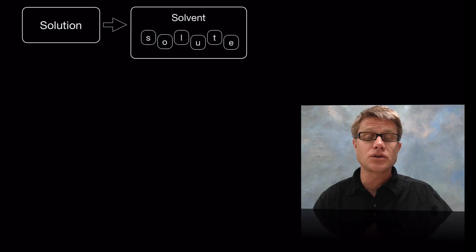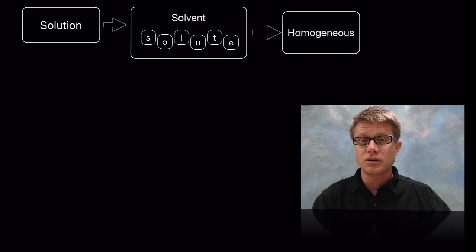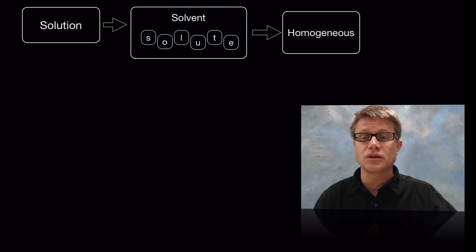Solvent and solutes. Solutes are going to be dissolved within the solvent, and generally we're going to have more of the solvent than the solute. They should be homogeneous in nature. That means they're going to be smooth throughout the whole. We can't see different parts or different concentrations in various areas.